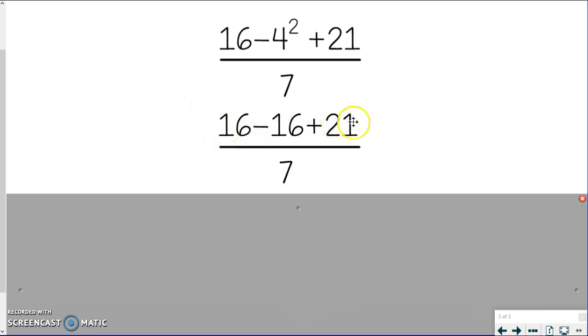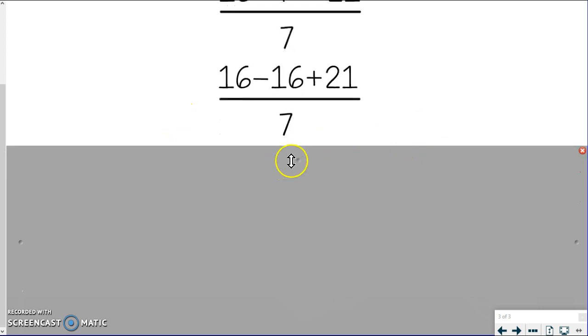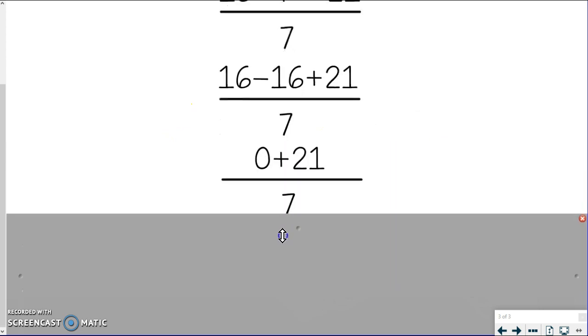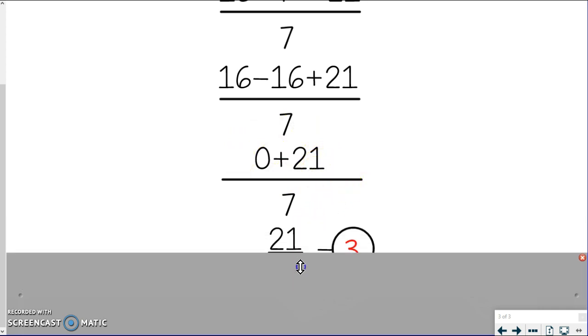So I've got subtraction, I've got addition. I'm doing it left to right. So 16 minus 16 first to get 0. 0 plus 21. I got to finish the top. Very simple.